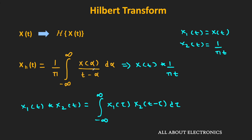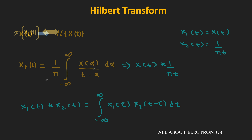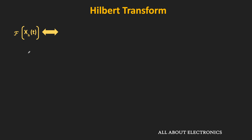Now let us do Fourier analysis and find the Fourier transform of this Hilbert transform signal. The Fourier transform will give us more information about the Hilbert transform. The Fourier transform of the Hilbert transform signal is actually the Fourier transform of the convolution of x(t) and 1/(πt).